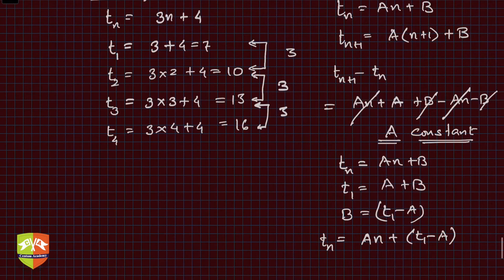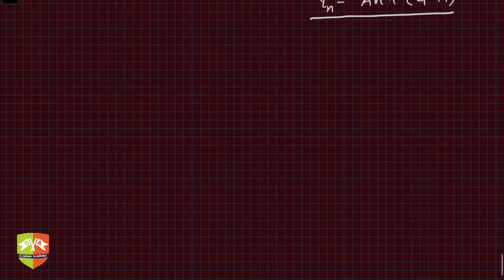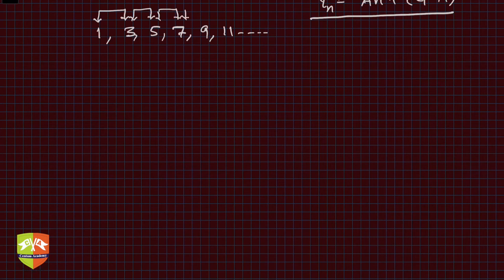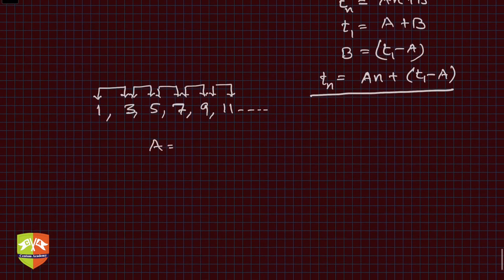Let's inspect a few more examples. Say I have 1, 3, 5, 7, 9, 11. Clearly the difference between two consecutive terms is constant, which is 2. We saw tn+1 - tn was a, so a will be simply 2.